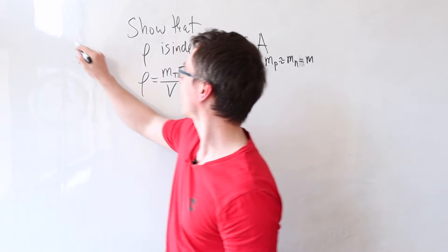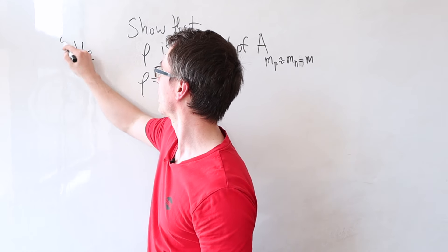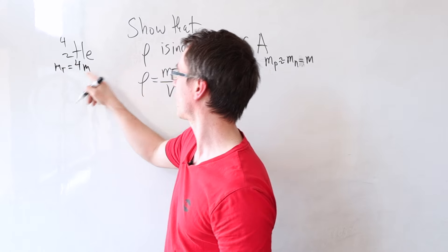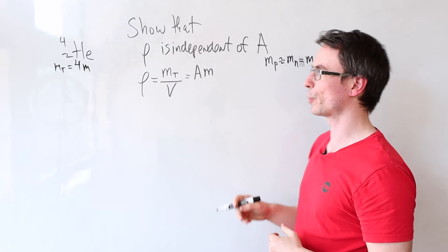For instance, if I had something like helium-4, then its total mass will just be equal to 4 times the mass of an individual nucleon.